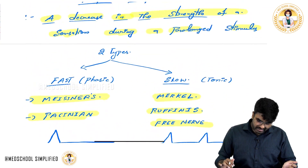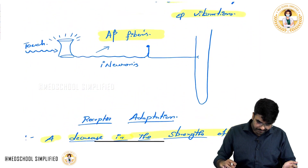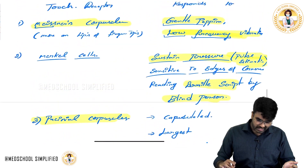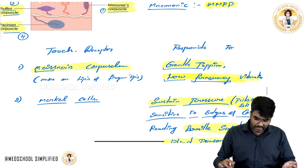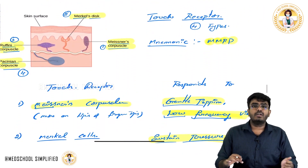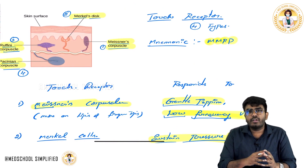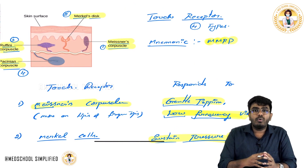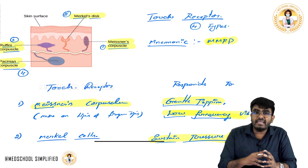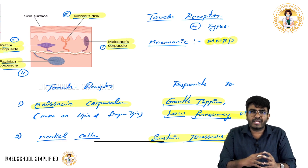With this, we have seen different types of touch receptors and the concept of receptor adaptation. Hope this video is helpful. In the next video, we will discuss about the pain receptors and a very important theory called the Gate Control Theory. Thank you.